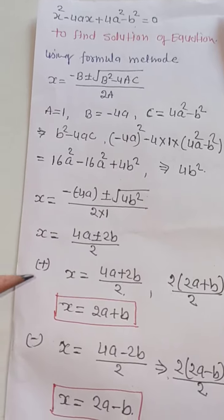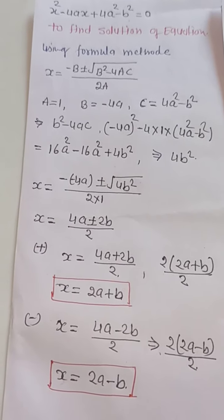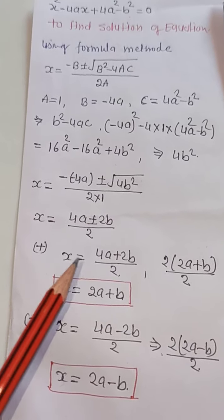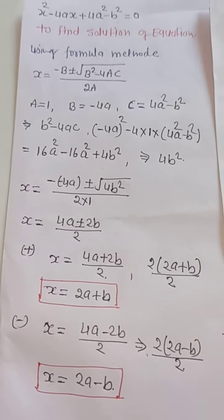Now you will take plus and minus sign. I take a plus sign. So you can see, value of x will be 4a plus 2b divided by 2. You can see 2 common. So first solution you will find.